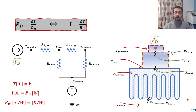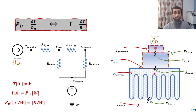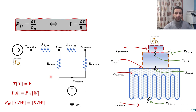This is a continuation of the slideshow on thermal considerations for power electronics devices. In the last video, we considered the electrical model that mimics the thermal flow from the junction to the ambient. We defined the thermal resistances and learned how to get them from the datasheet. We will now elaborate on that and solve some questions to practice how we find junction temperature or use it for design and estimation of any other temperature point.